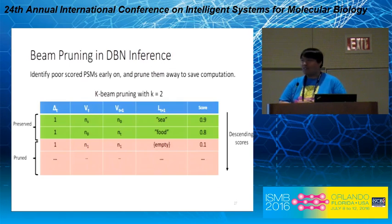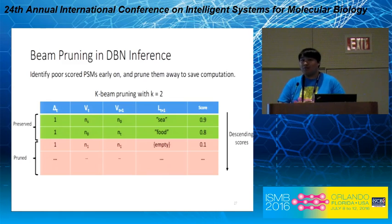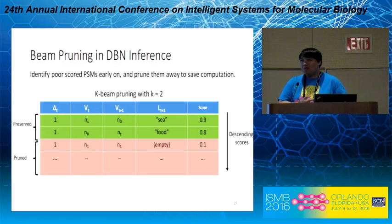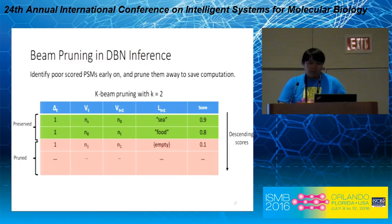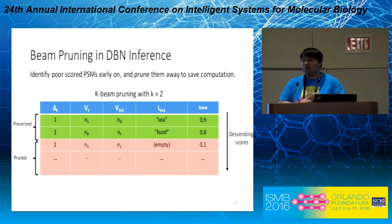Finally, another great benefit of using DBN to connect trellises with scoring functions is that we can benefit from the beam pruning technique. The general idea is that as we are scoring the set of candidate peptides collectively, we can identify very poorly scored candidates early on during inference based on their partial scores, and prune them away to save computation. Illustrated here is a simple beam pruning technique called K-beam pruning with K equals 2, where we only keep the top two scored candidates, making computation much faster.